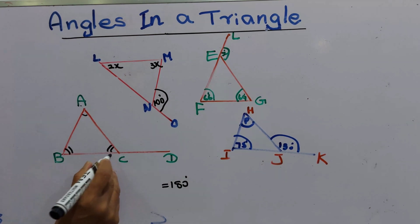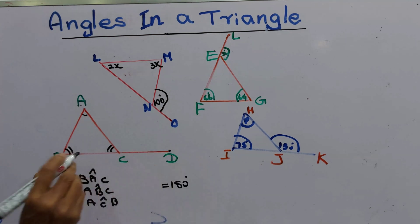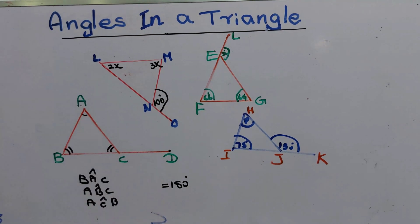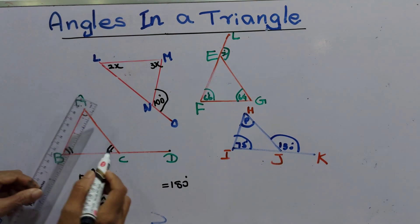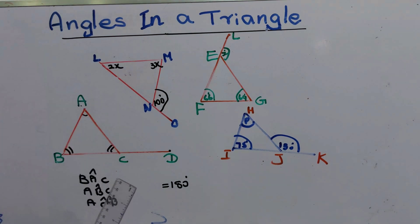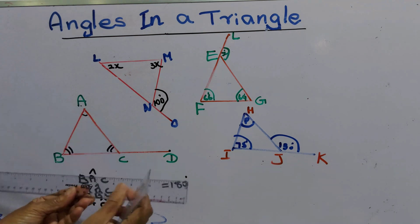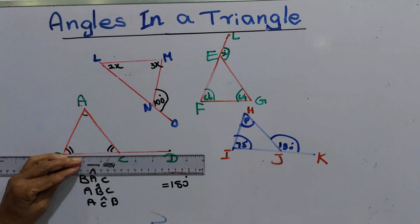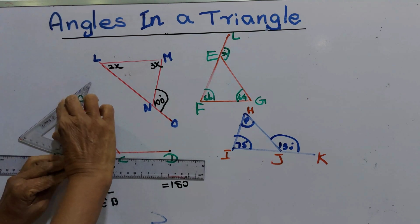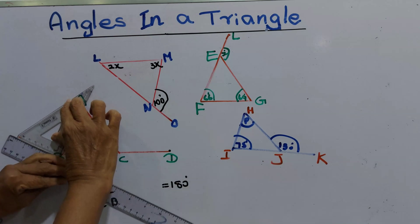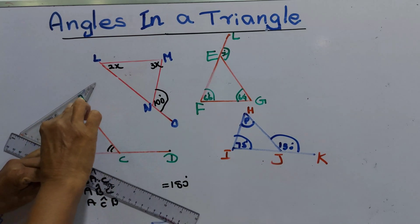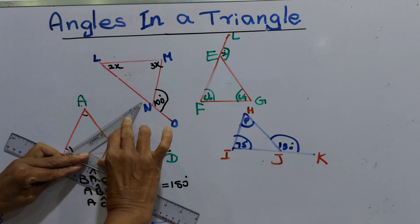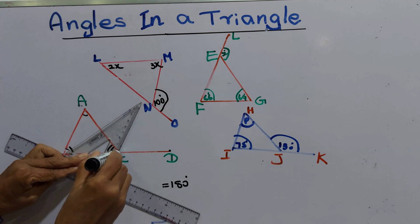Then BC side is produced to D. Now we can draw a parallel line to BA from C point. Keep the roller on this line, take the set square, keep the set square here like this, then move the set square along the roller. Then we can draw a parallel line from C.